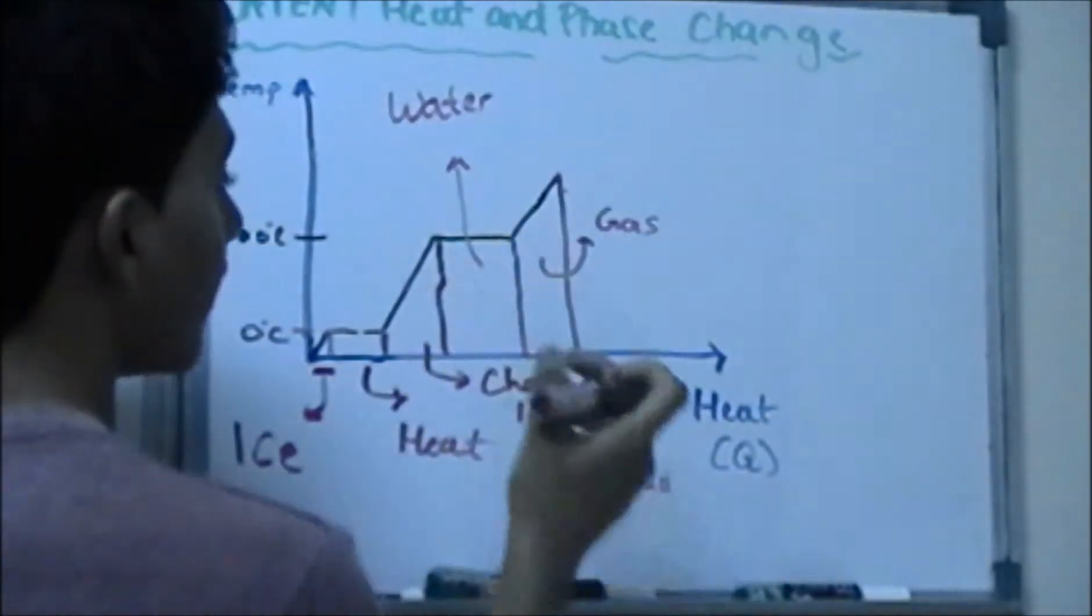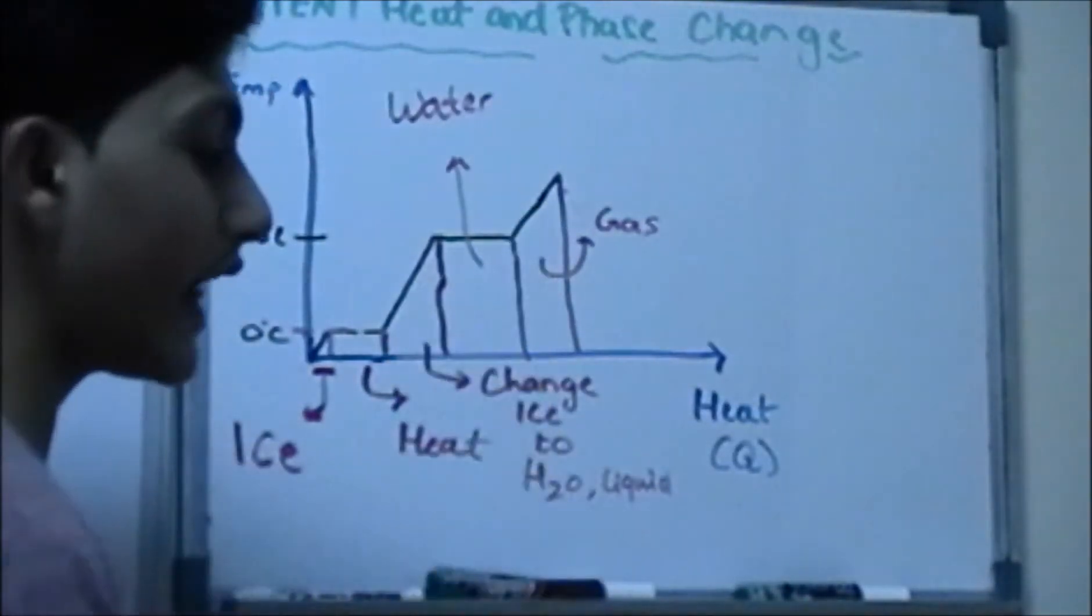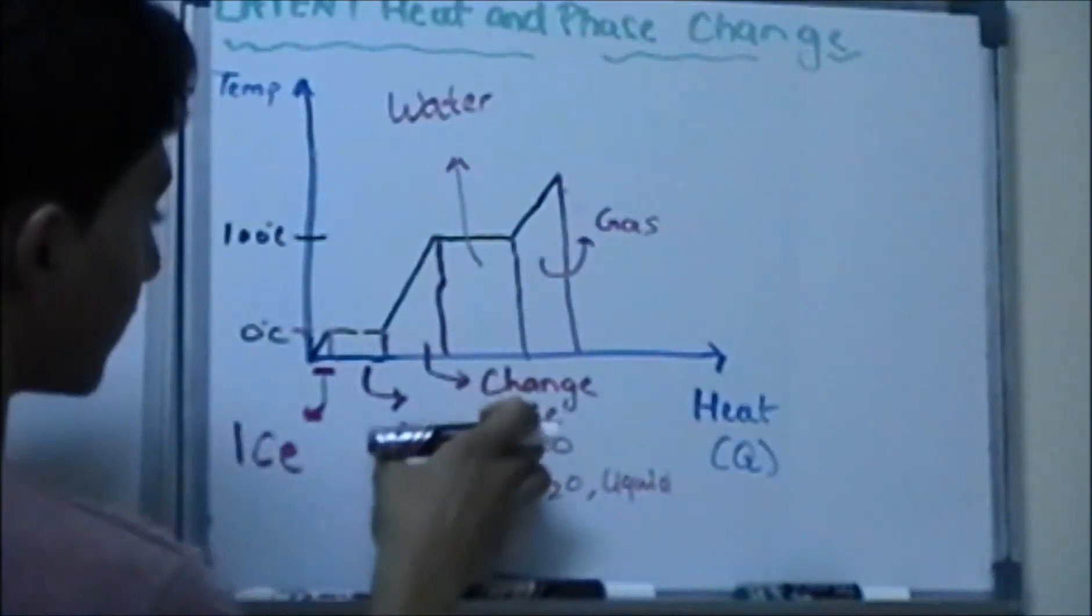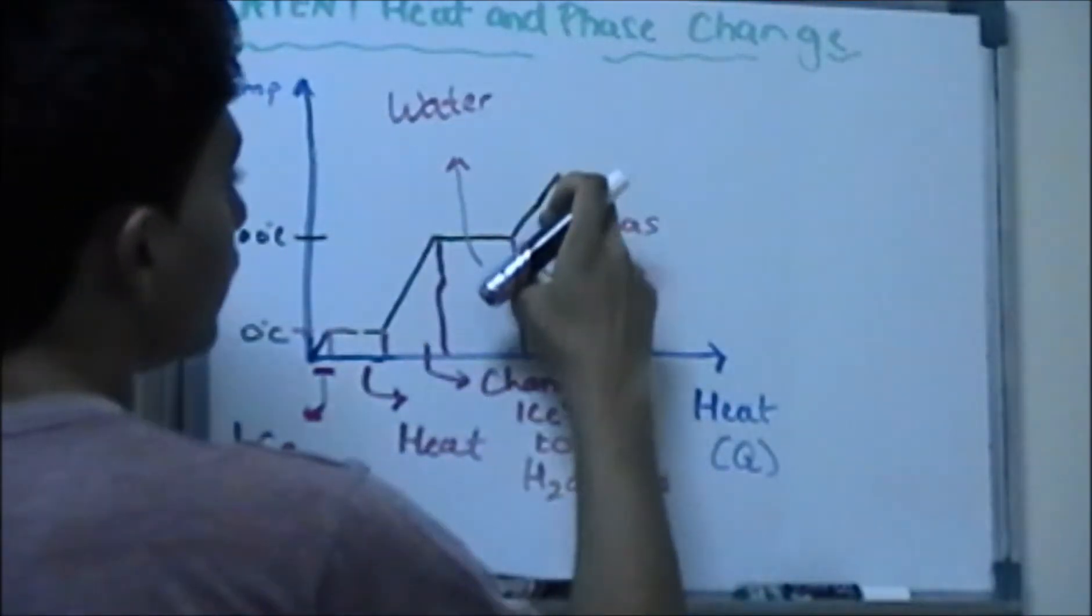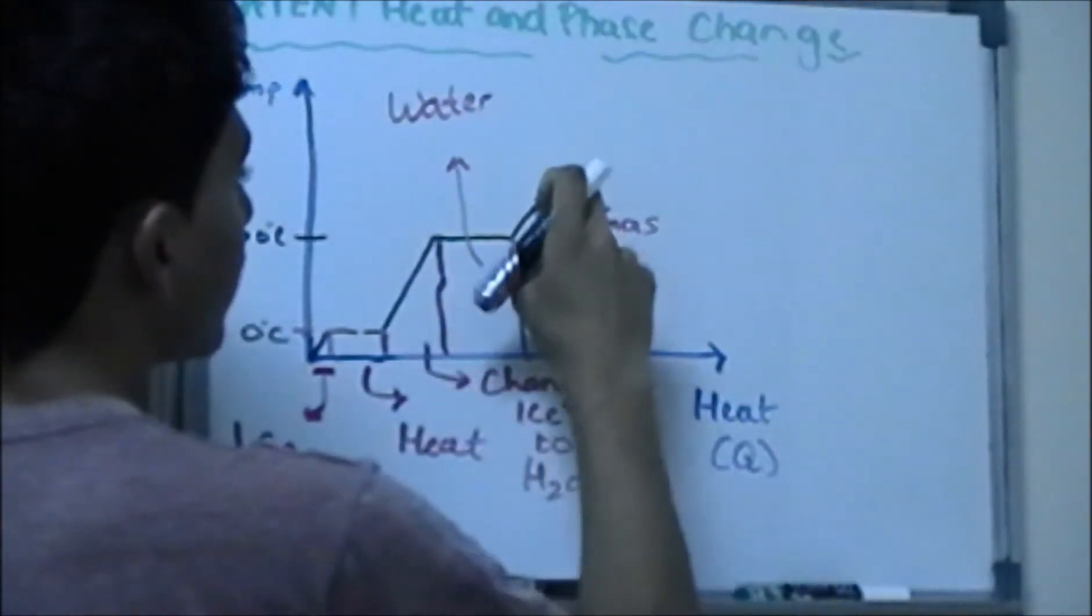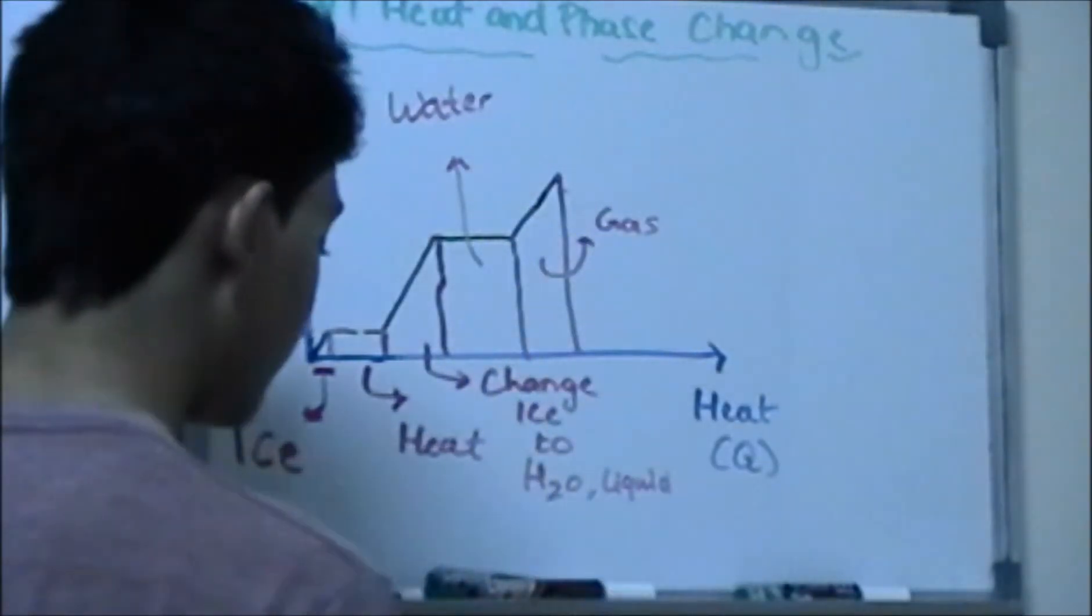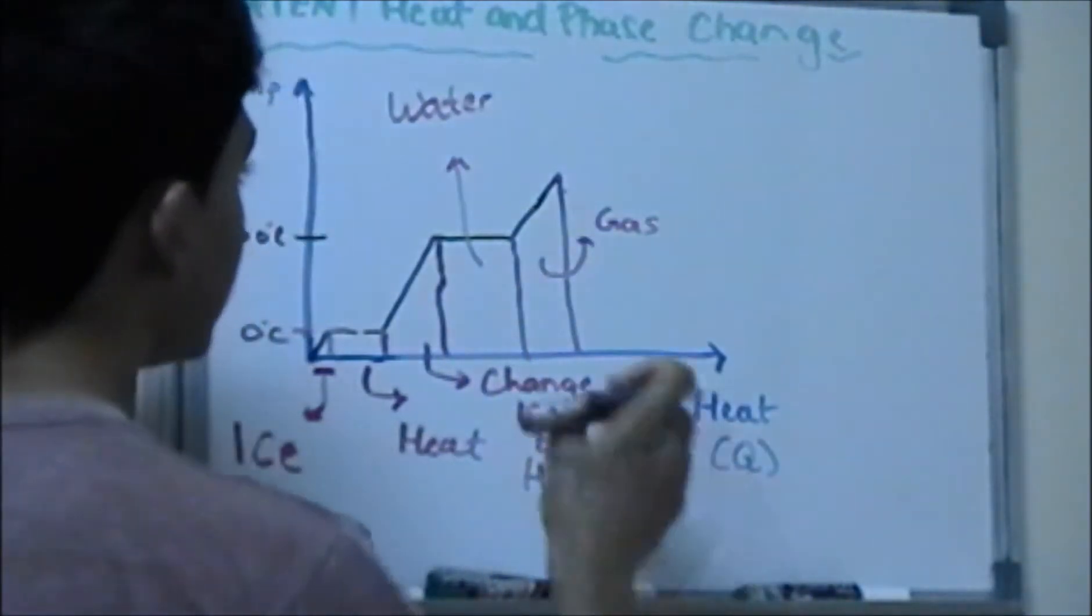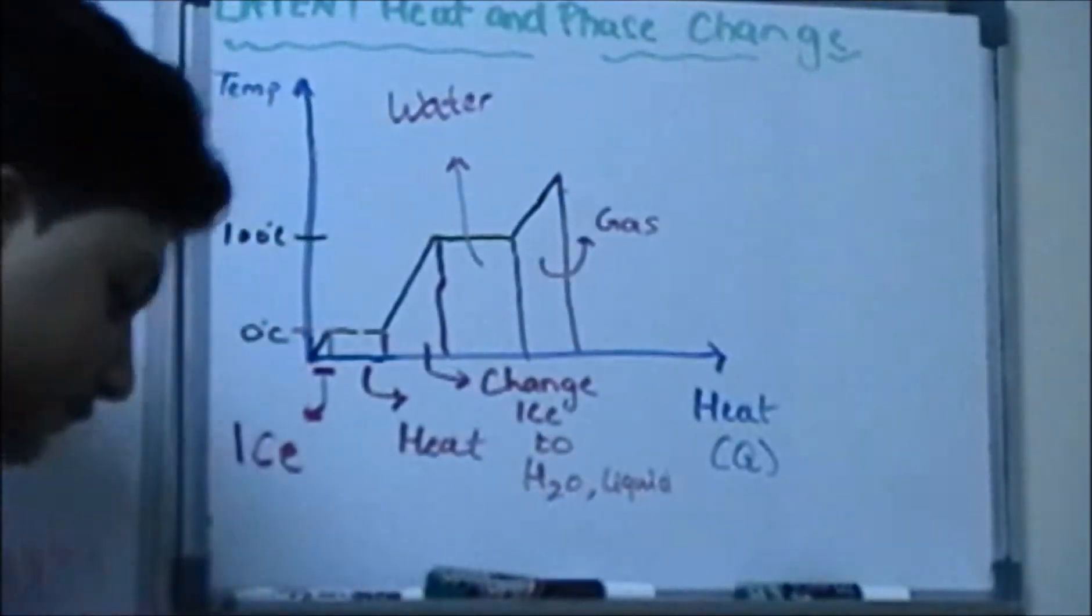And here we have water because it's already changing the water. Also here plus additional thing that adds on to this is the same thing over here. It gains heat because in order to become gas it has to gain heat over here. After it has completely become water it has to gain heat to become vaporization or become gas over here.